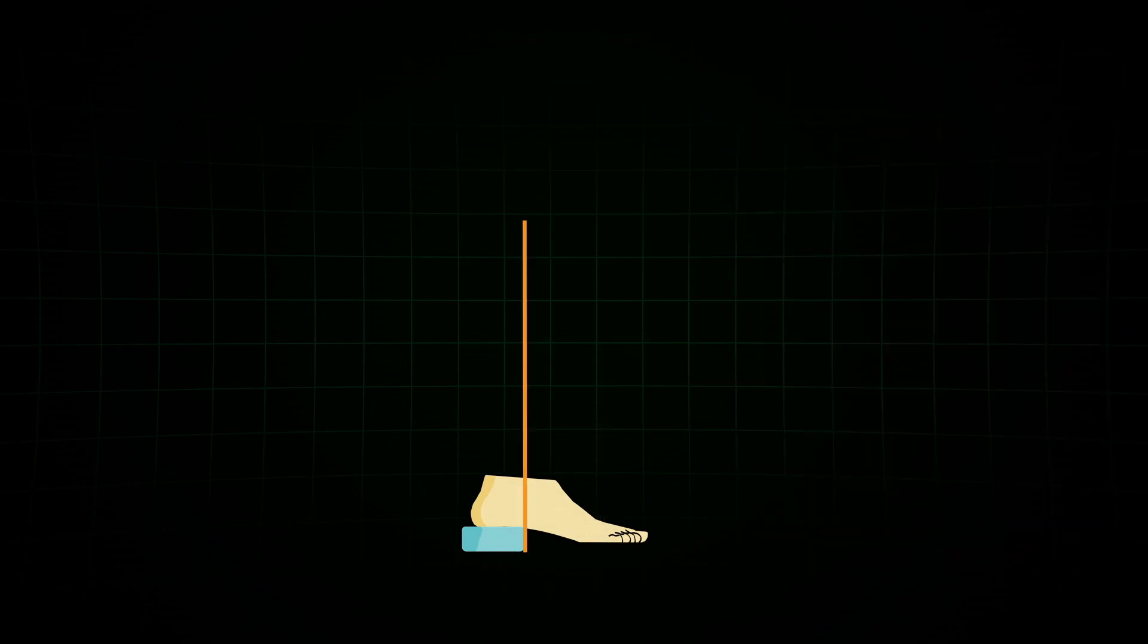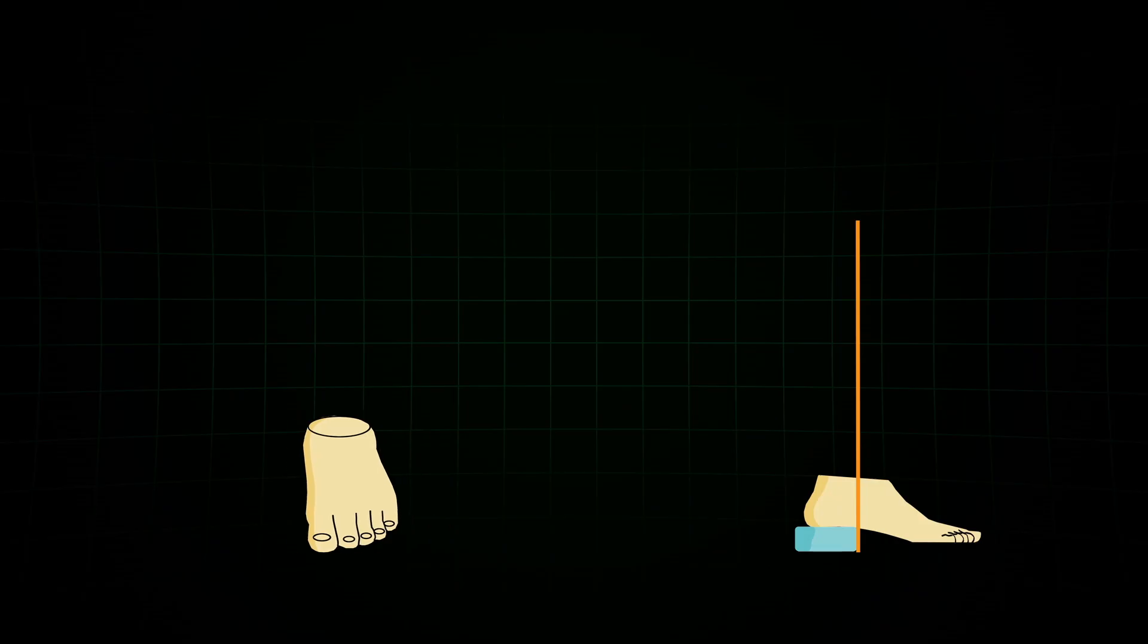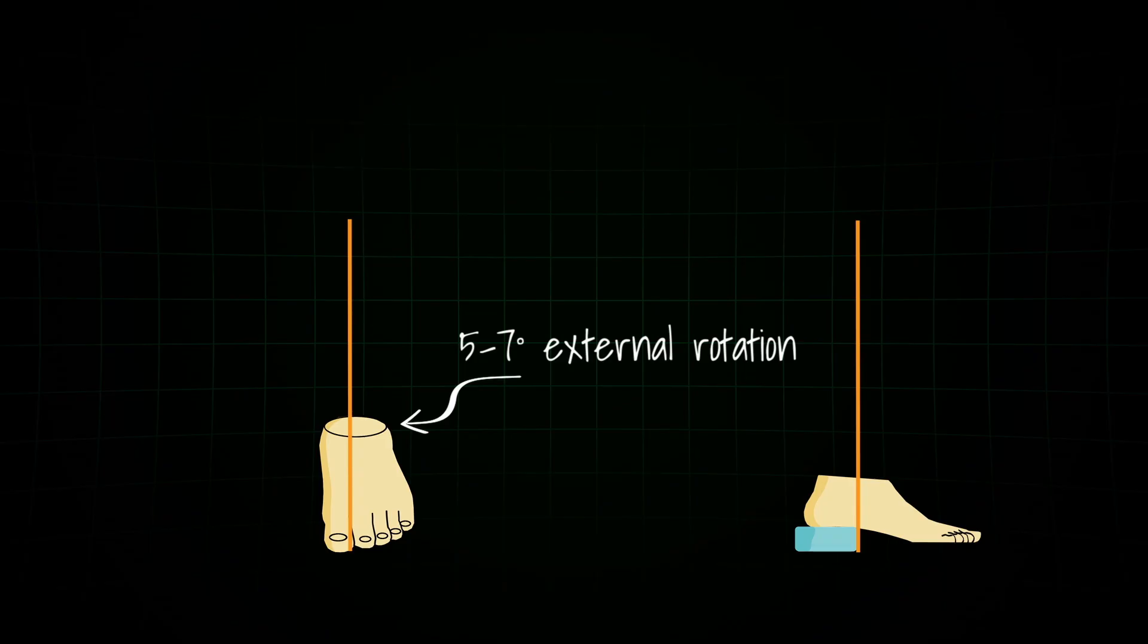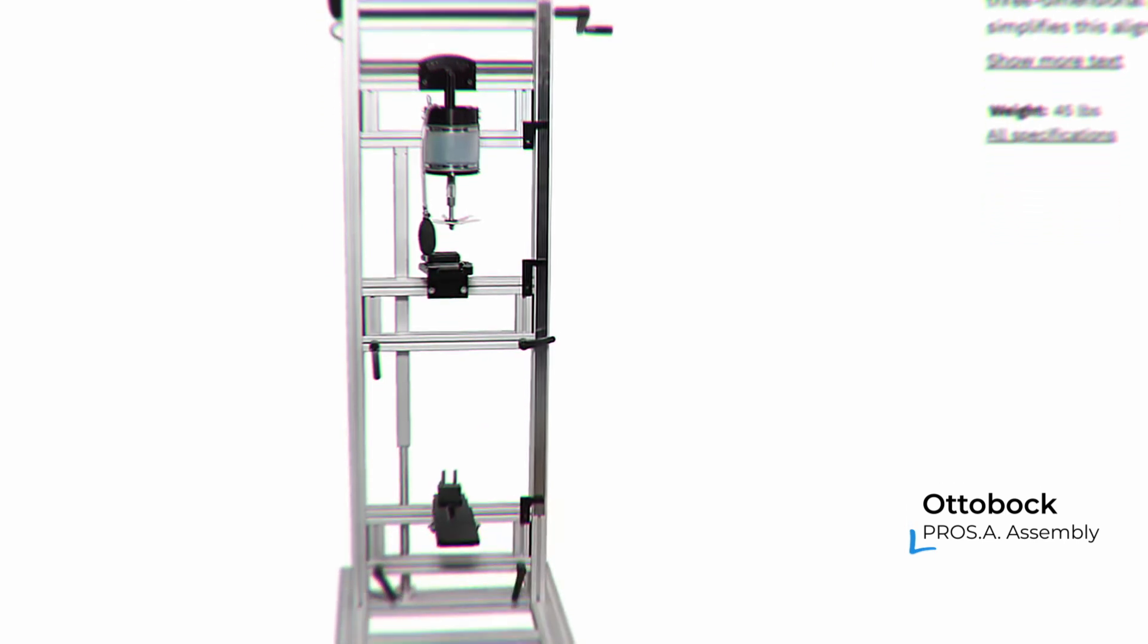In the frontal plane, it is good to aim for an external rotation of five to seven degrees. Either you use your goniometer to measure it out or use the scale on your alignment device. The supination and pronation should be neutral so that the middle of the foot has ground contact. For your reference line, you can use a laser, a simple string with a weight on it or a more advanced alignment setup.